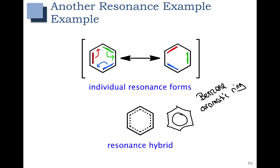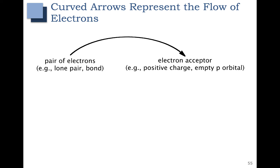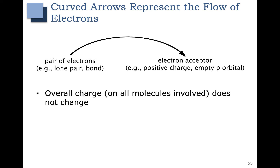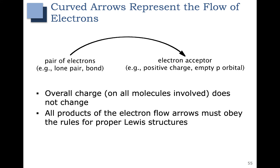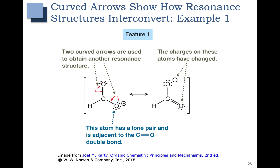In the previous example I used curved arrows to represent the flow of electrons, and there's a very specific way to draw these correctly. The curved arrows must always come from the pair of electrons you are moving, and point to where you're moving them - typically an electron acceptor like a positive charge, a new bond, or an empty p orbital. When using curved arrows to represent resonance, the overall charge on the molecule does not change. Also, the products of these electron flow arrows must obey the rules for proper Lewis structures - we can't move electrons over to a carbon and give it a fifth bond.